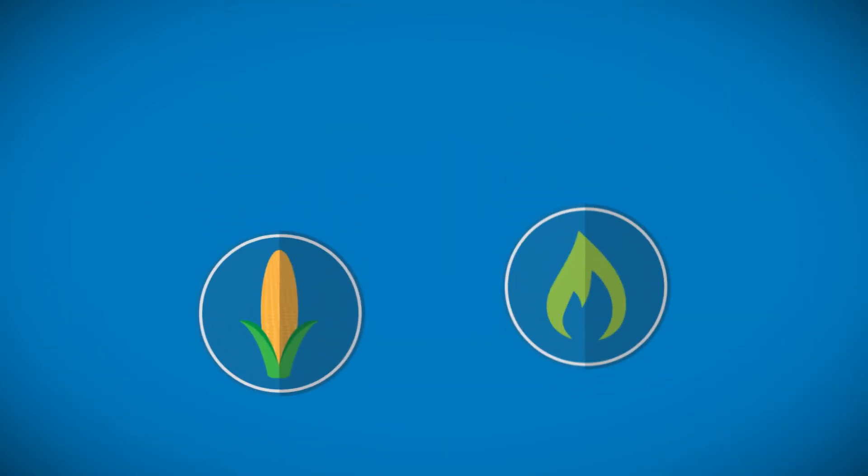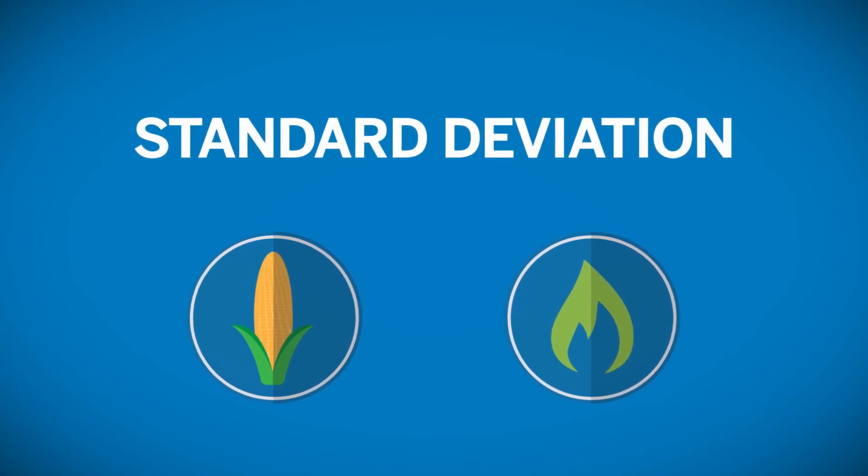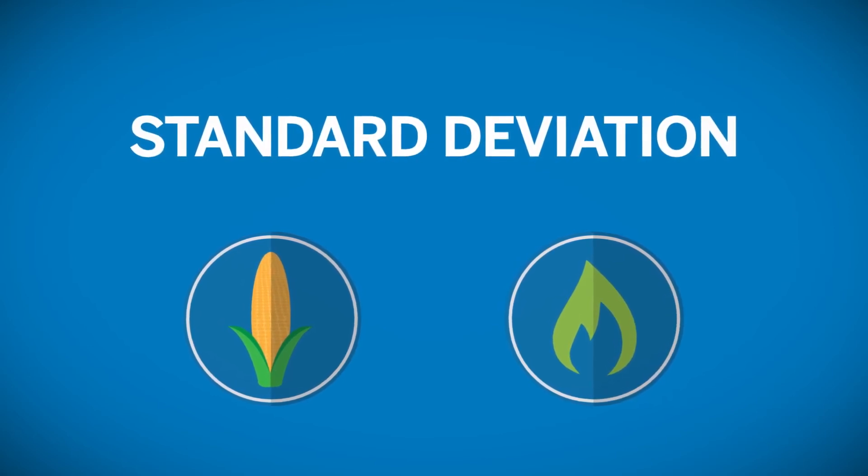To recap, you have seen the bounciness of an asset is referred to as the standard deviation. In the options world, that standard deviation is always annualized and is called volatility.